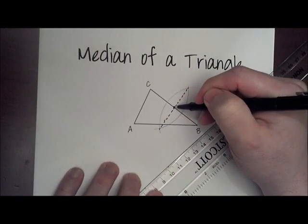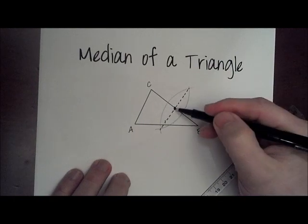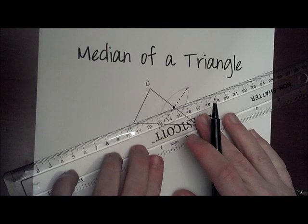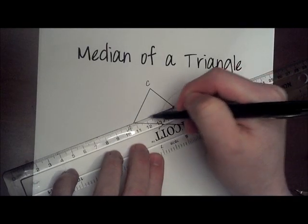Now this tells me that the midpoint of segment CB is located right here. All that's left to do once you've located the midpoint is connect it to the vertex that we mentioned in the directions. We said to construct the median from point A to the midpoint of its opposite side.